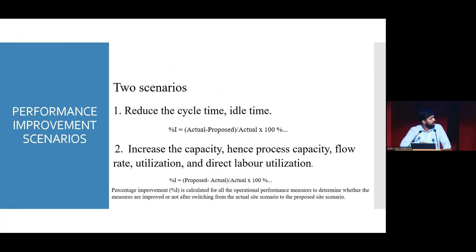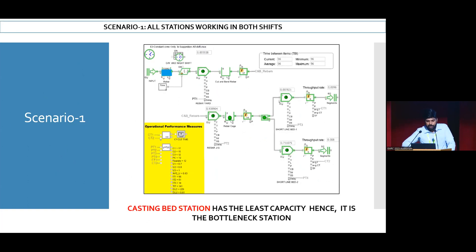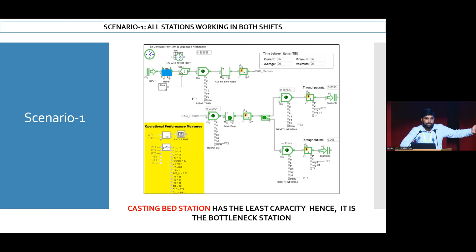Two scenarios were considered in this study. The main objective is to reduce cycle time and idle time, and to increase capacity, process capacity, flow rate, utilization, and direct labor utilization. In Scenario 1, I assumed all stations are working in both day and night shifts. Previously only station one was working in day shift only. With station one now working both shifts, capacity at station one increases, providing extra cut-and-bend output for tying work. The bottleneck shifts from station one to station three, and overall productivity of the process increases to 0.61. Some idle time in the form of waiting time between stations is also reduced.